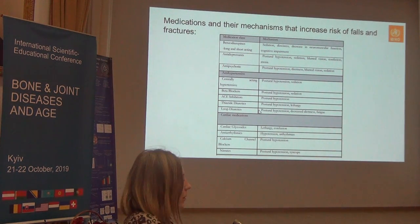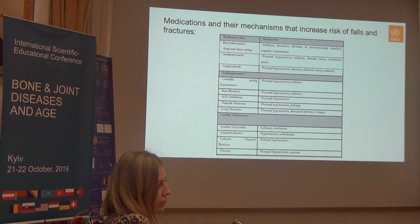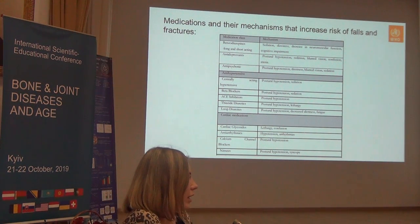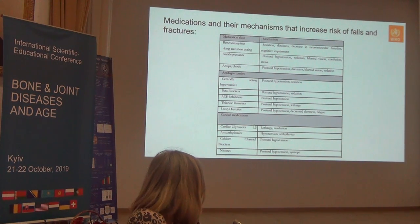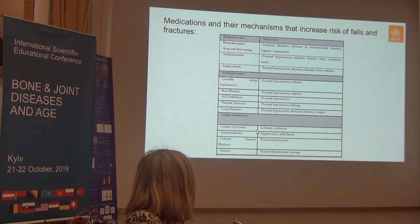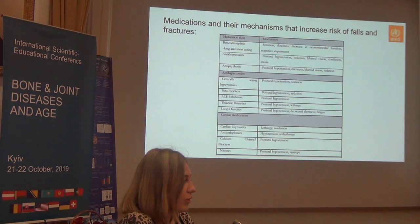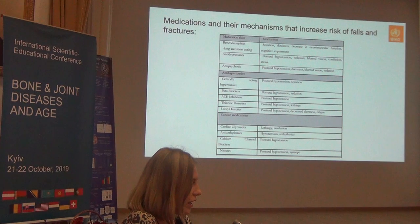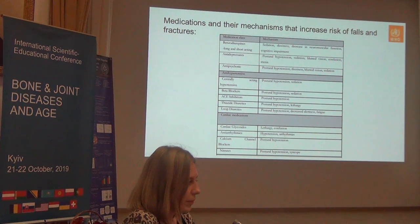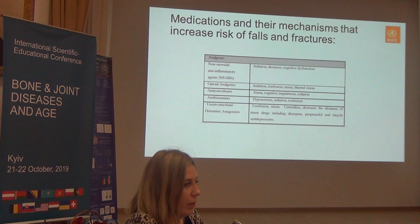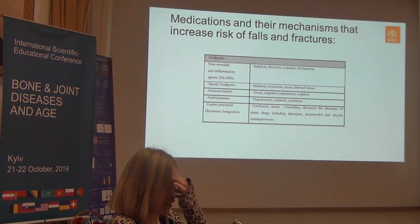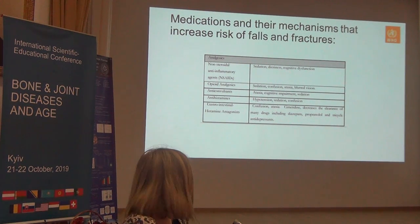Here we can see examples of some drugs that we use, for example in psychiatry, to treat different diseases that can increase the risk of fall syndrome. Another category includes drugs used in treatment of cardiovascular diseases: anti-hypertensive drugs, cardiac glycosides, and diuretics. Another large group is analgesics, and unfortunately this also includes non-steroidal anti-inflammatory drugs.